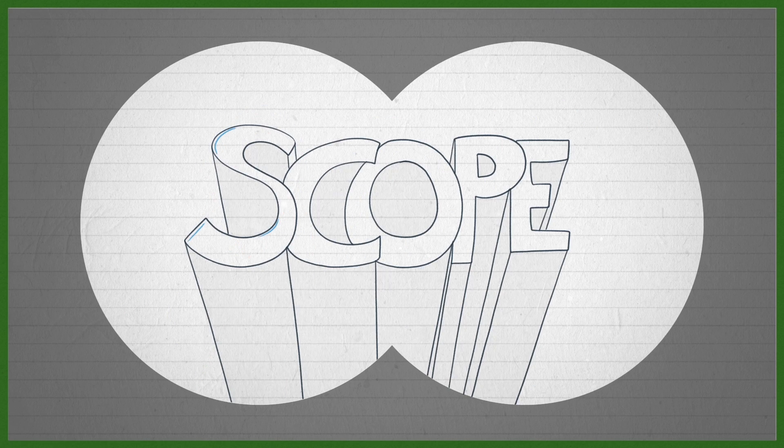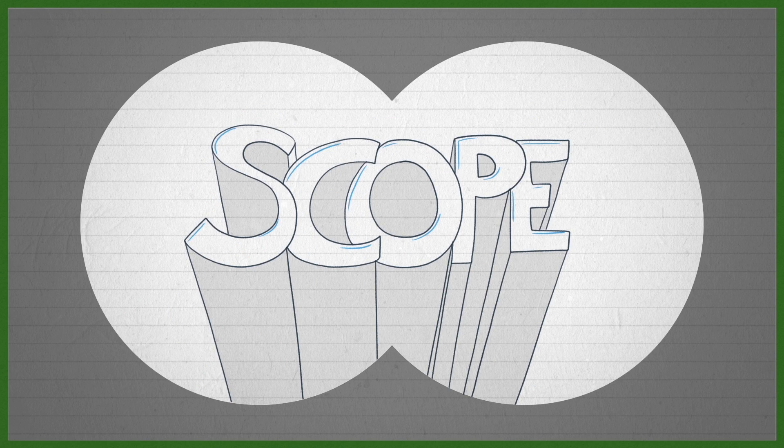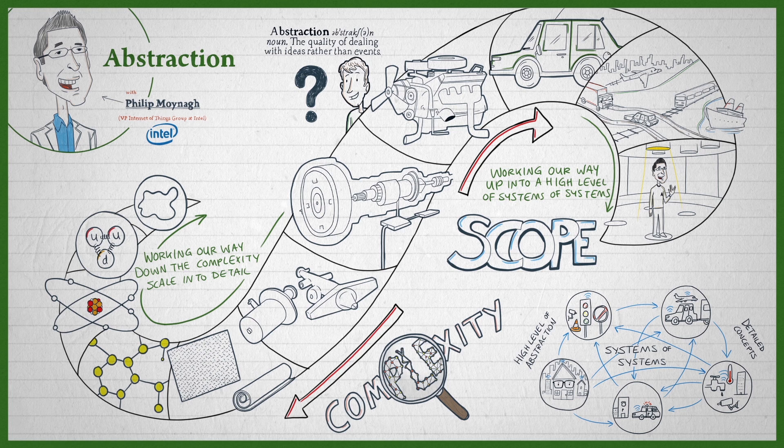So the problem of complex system implementation like Internet of Things on planet Earth is scope with a high degree of complexity, and an important concept in handling that is abstraction.